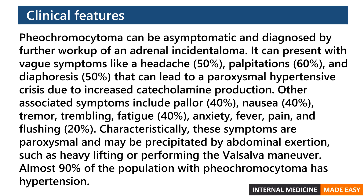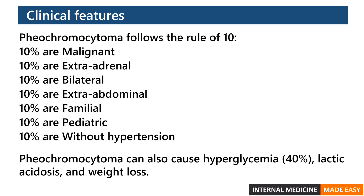Almost 90% of the population with pheochromocytoma has hypertension. Pheochromocytoma follows the rule of 10: 10% of the tumors are malignant, 10% are extra-adrenal, 10% are bilateral, 10% are extra-abdominal, 10% are familial, 10% are pediatric, and 10% are without hypertension. Pheochromocytoma can also cause hyperglycemia, lactic acidosis, and weight loss.